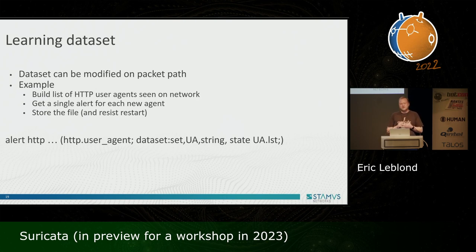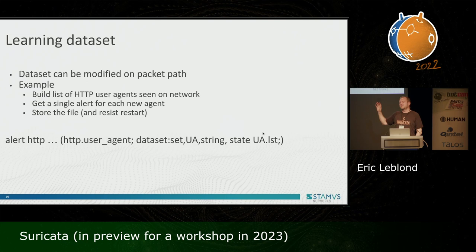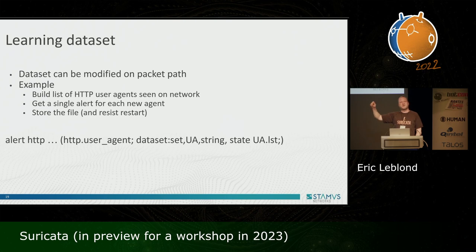One really interesting feature is that the dataset can learn. You can, for instance, build the list of HTTP user-agents from inside Suricata itself. You can just do: alert HTTP, HTTP user-agent, dataset set, in the user-agent group stored in this url.lst file. This way you construct the list of different metadata seen on the network. The interesting output of this is basically the list of patient-zero for that metadata. So if an IOC comes six months later, you can go back to this alert and see when you first saw that HTTP user-agent on your network — and you don't need to keep all the HTTP requests; this is a really small-volume database to work with.